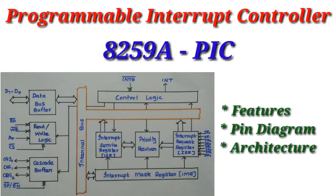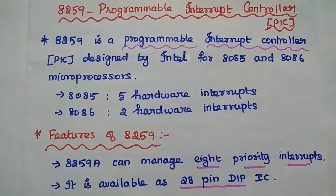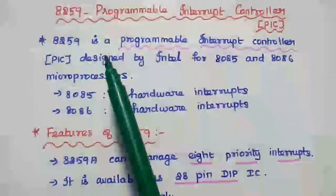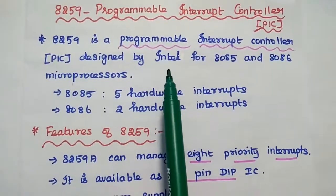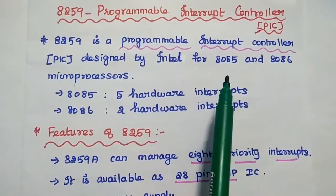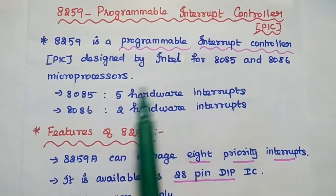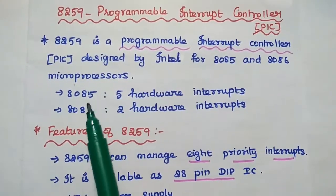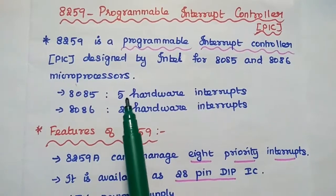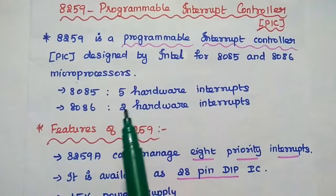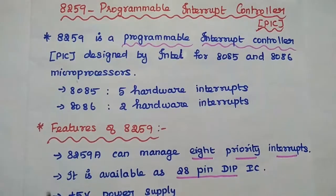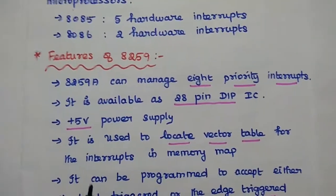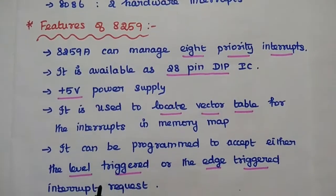Dear students, now we are going to discuss the features and architecture of Programmable Interrupt Controller in detail. The 8259 is a Programmable Interrupt Controller designed by Intel Corporation for 8085 and 8086 microprocessors. In general, the 8085 processor has 5 hardware interrupts, and the 8086 has 2 hardware interrupts. Next, we are going to discuss the features of 8259.